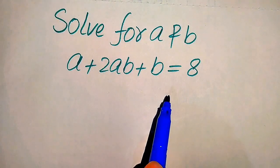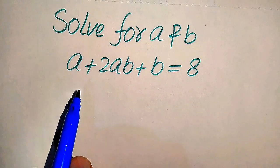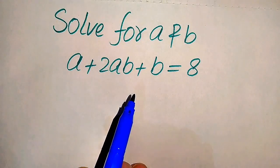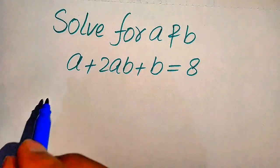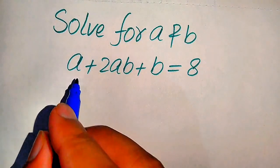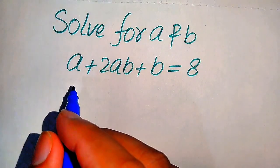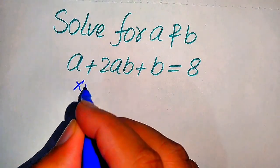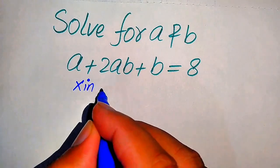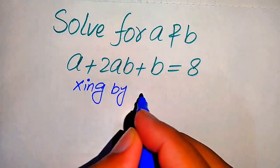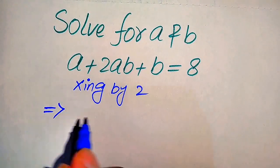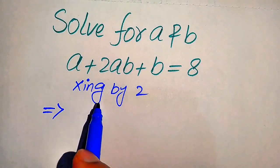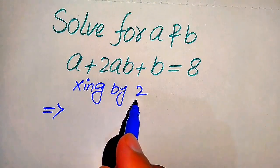The very first thing we are going to do is make the factors of the left hand side. In order to make the factors of the left hand side, we need to multiply both sides by 2. We do this step because we need to make the factors of this equation.